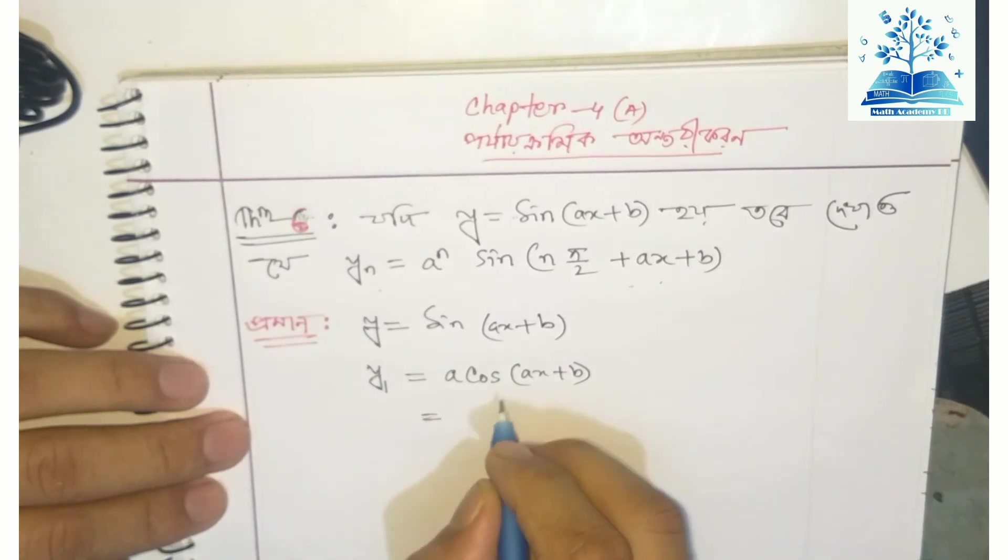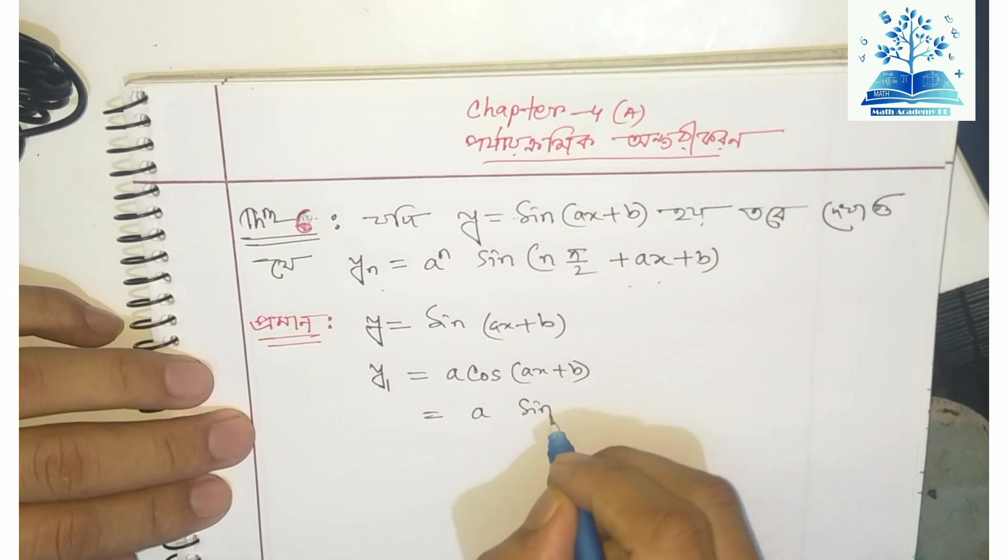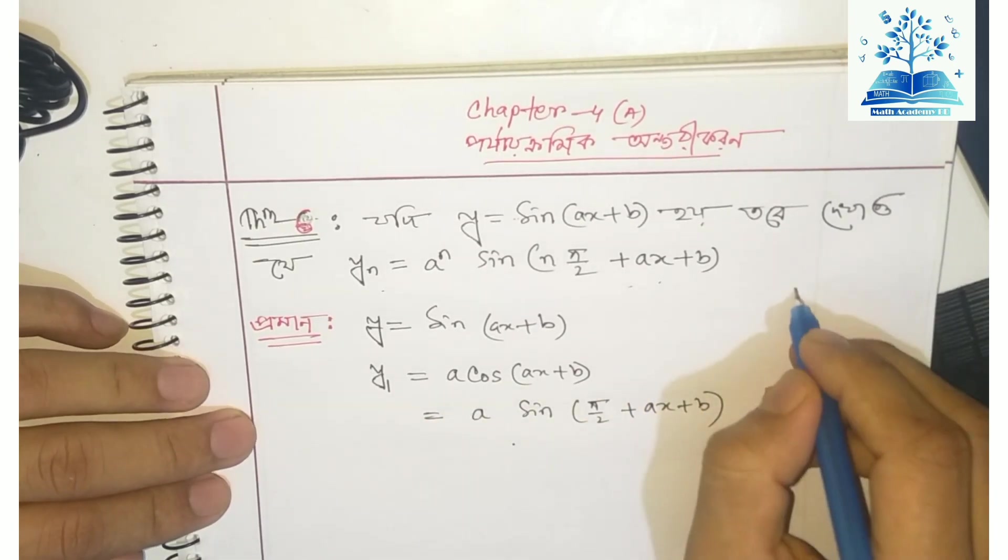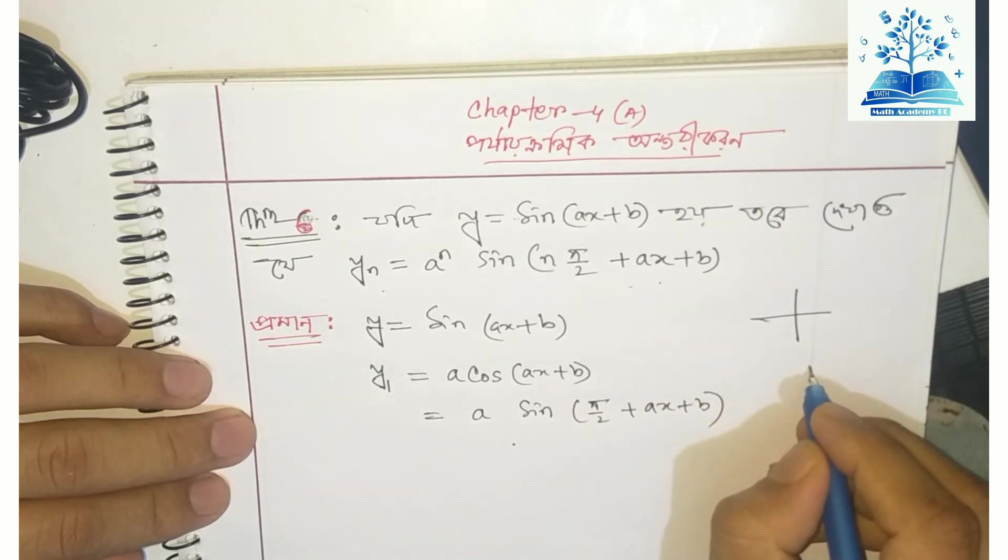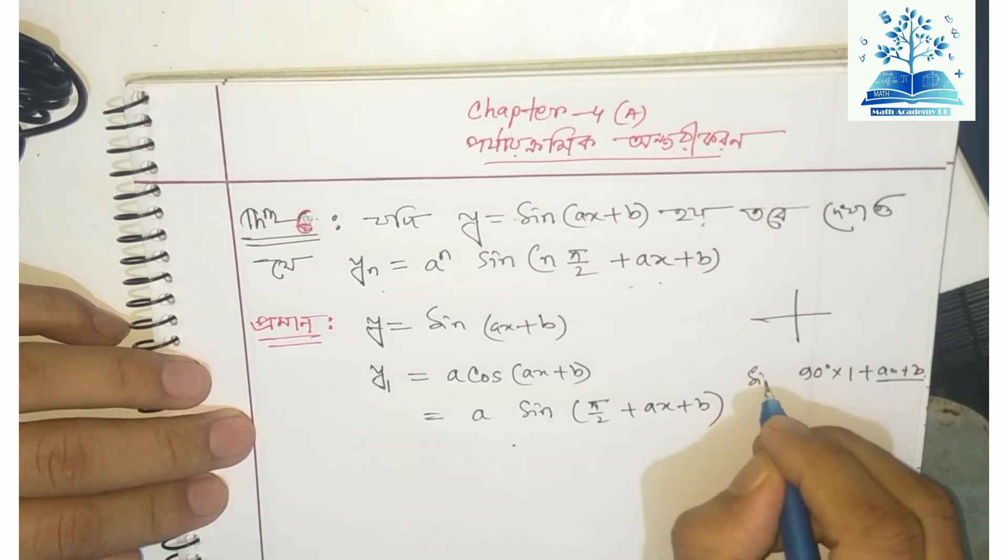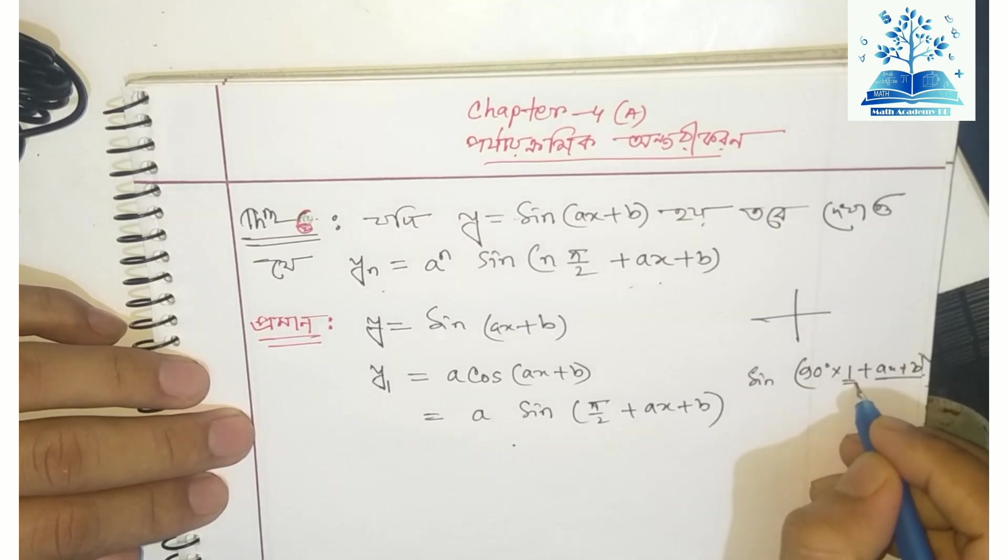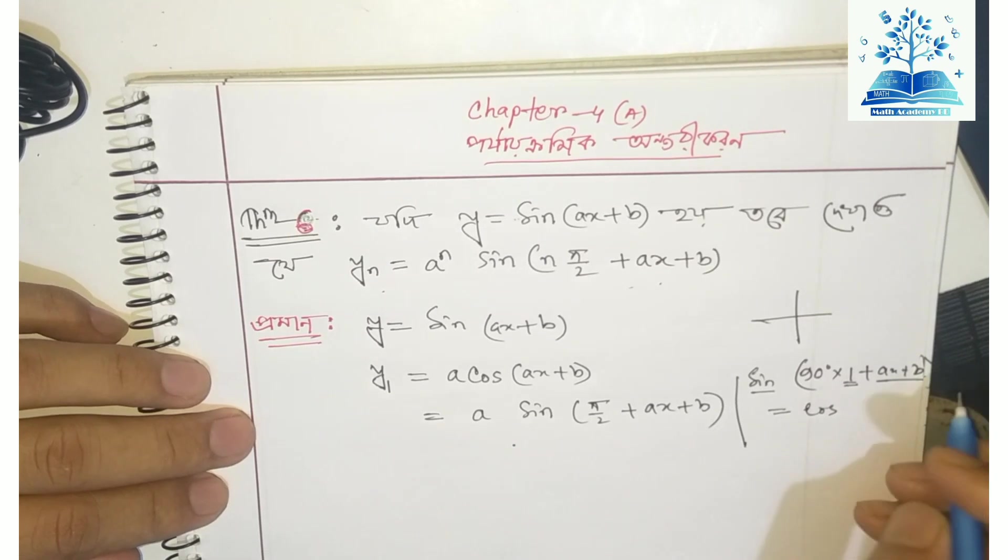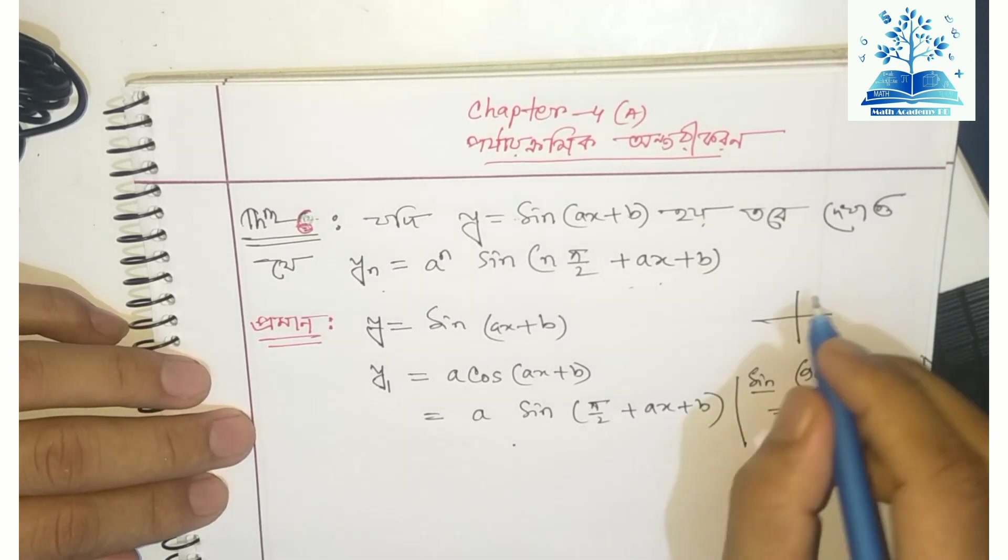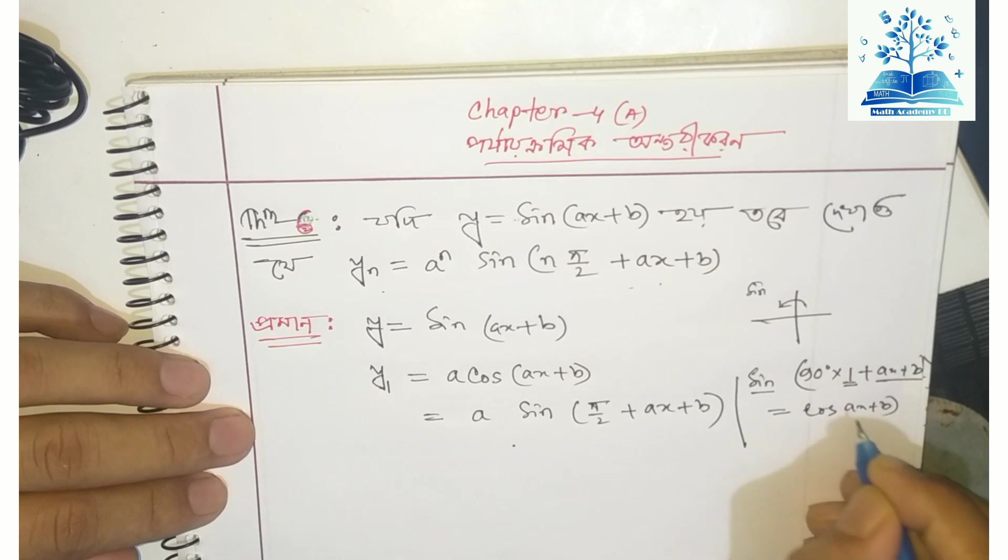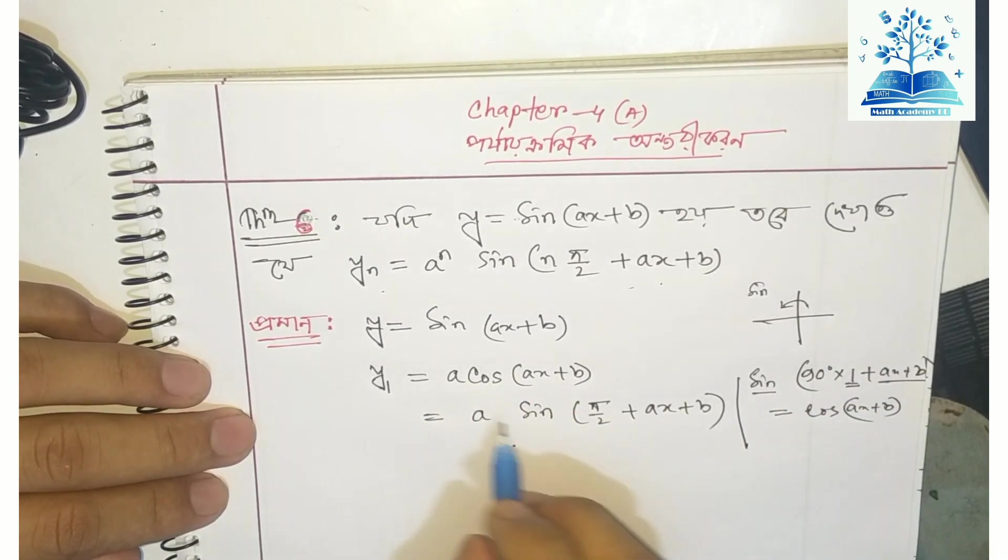Now I will write y₂: the derivative of sin(x + b). We will differentiate again. I'll write it. The derivative becomes cos(x). When we differentiate cos, we get -sin. So y₂: derivative of cos(x) gives us -sin(x + b).